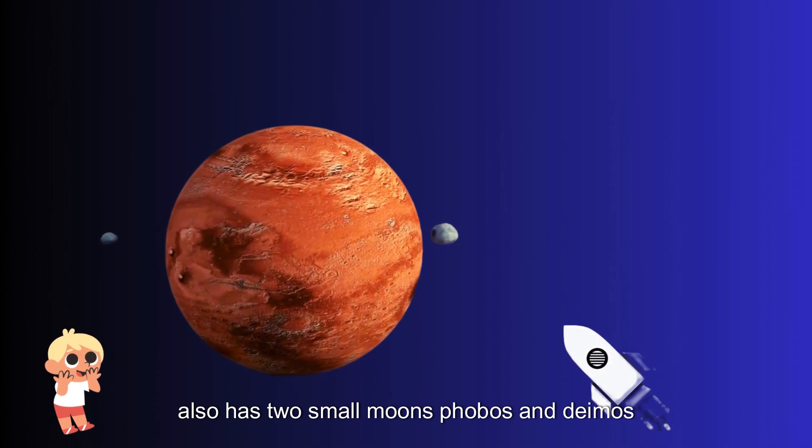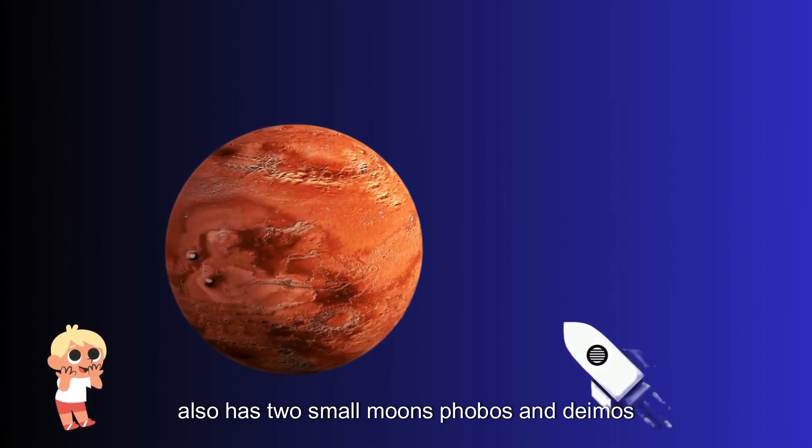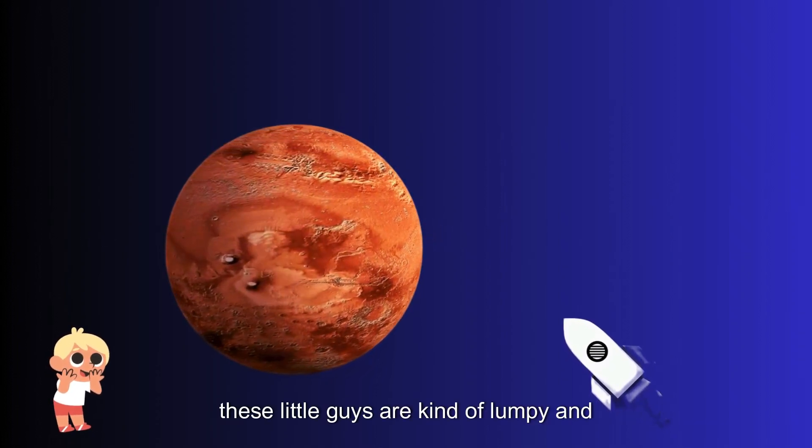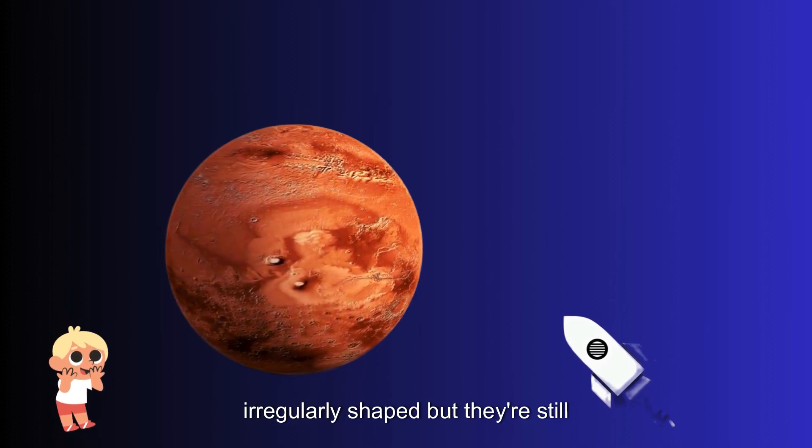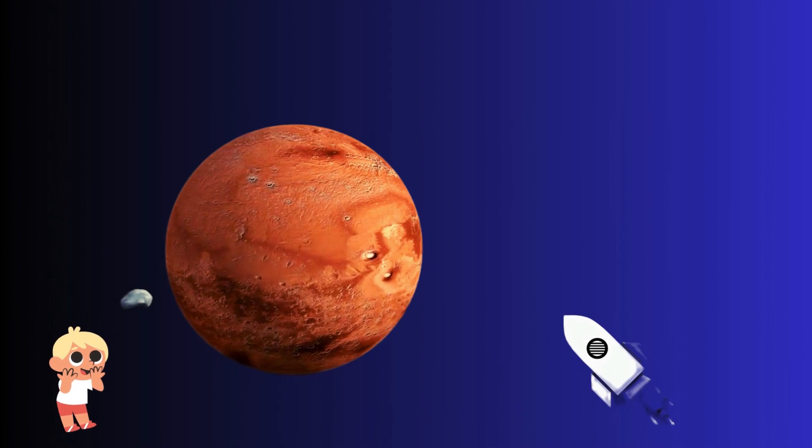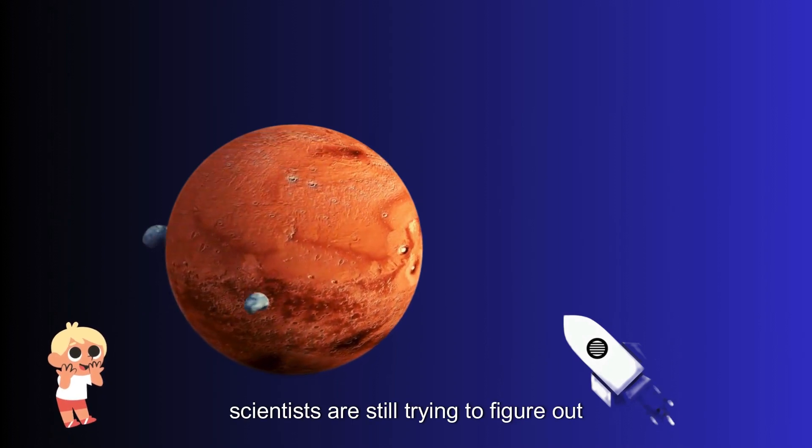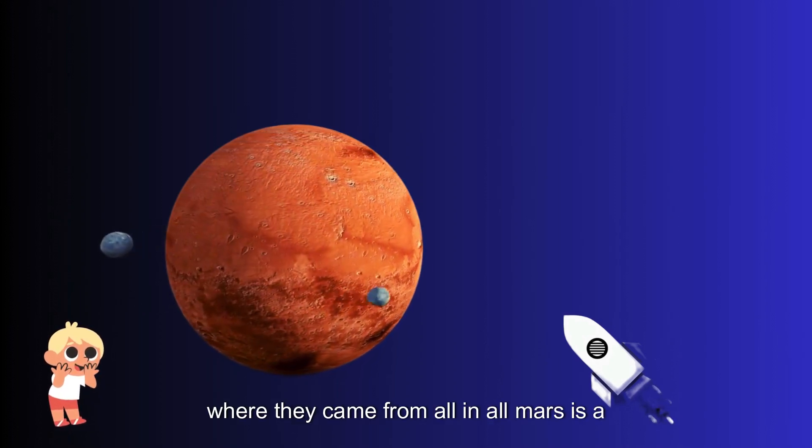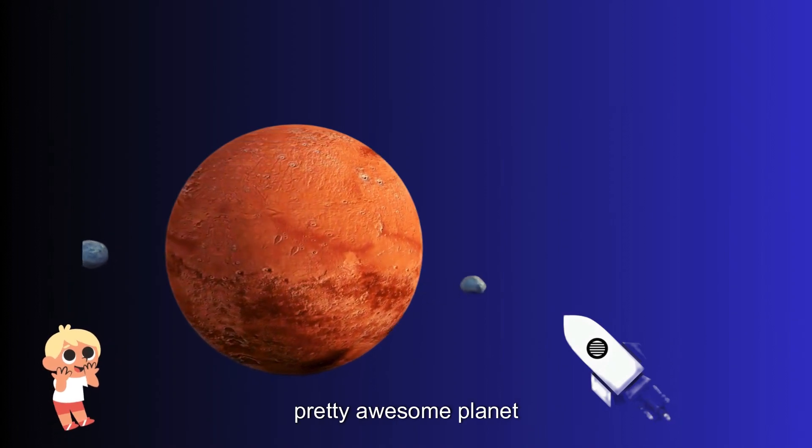Mars also has two small moons, Phobos and Deimos. These little guys are kind of lumpy and irregularly shaped, but they're still fascinating to learn about. Scientists are still trying to figure out where they came from. All in all, Mars is a pretty awesome planet.